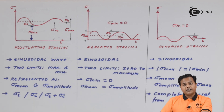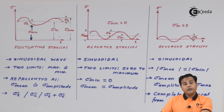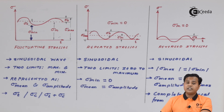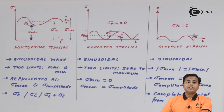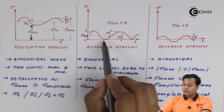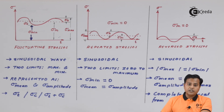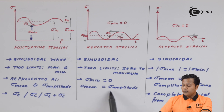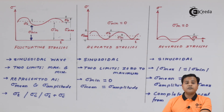For repeated stresses, the waveform is again sinusoidal, but the two limits are zero to maximum. The minimum stress equals zero, so there is no lower stress value — it is always zero. There will be a certain maximum stress value. Hence, in this case the mean stress and the amplitude stress are equal to each other.